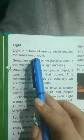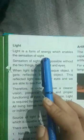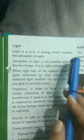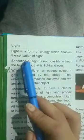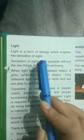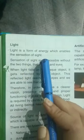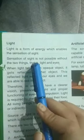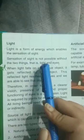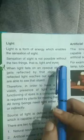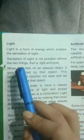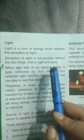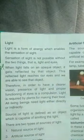Light energy is a form of energy which enables the sensation of sight. Sensation of sight is not possible without two things — that is, light and eyes.